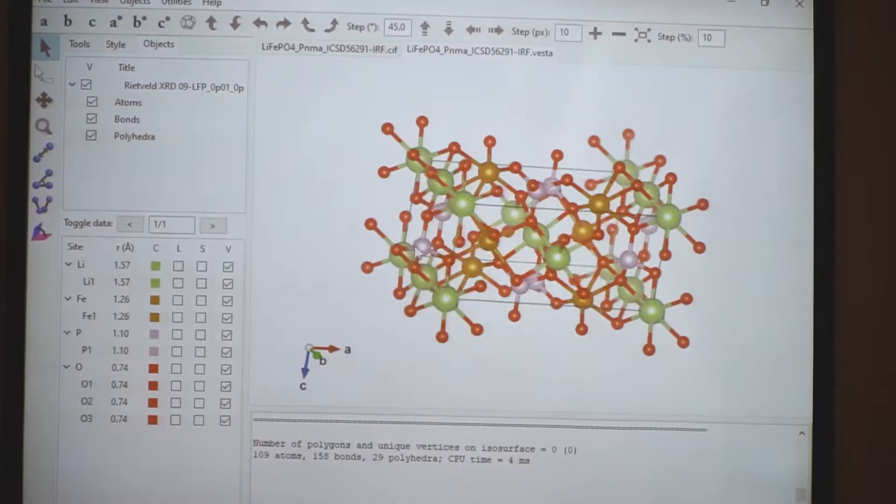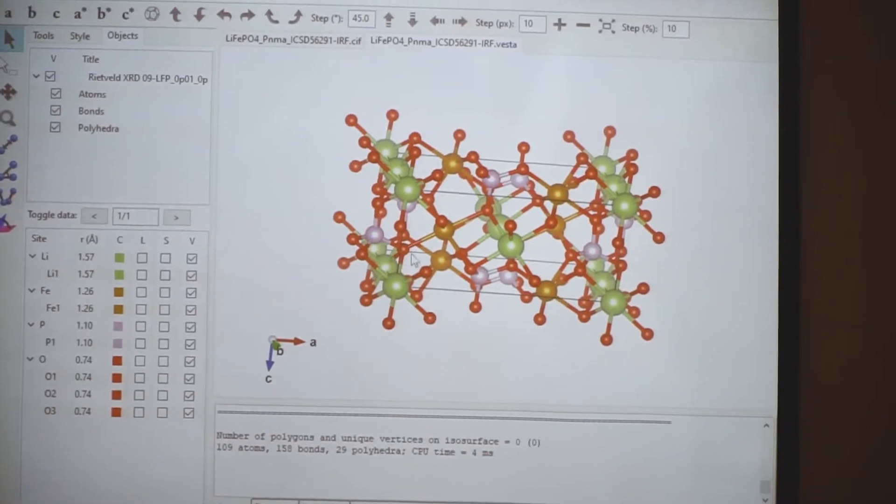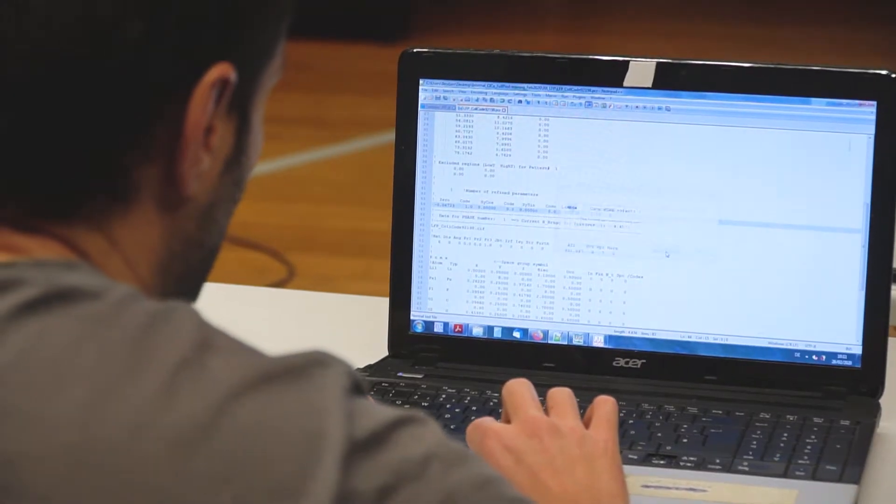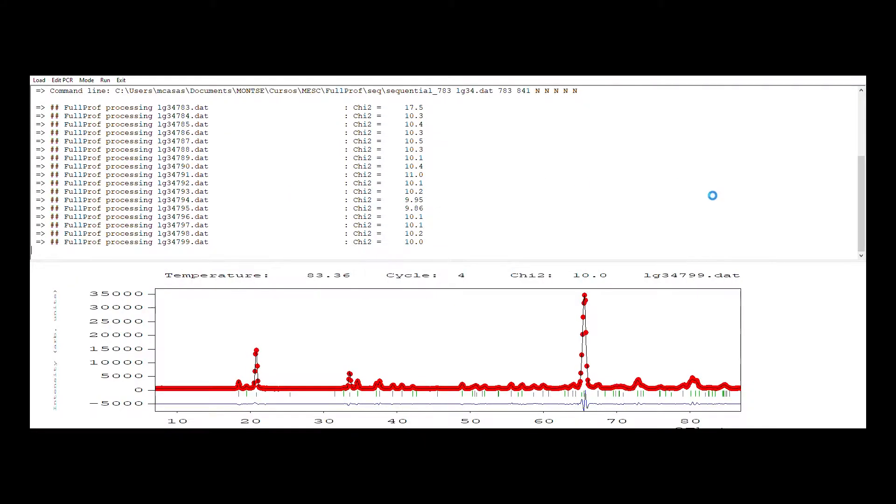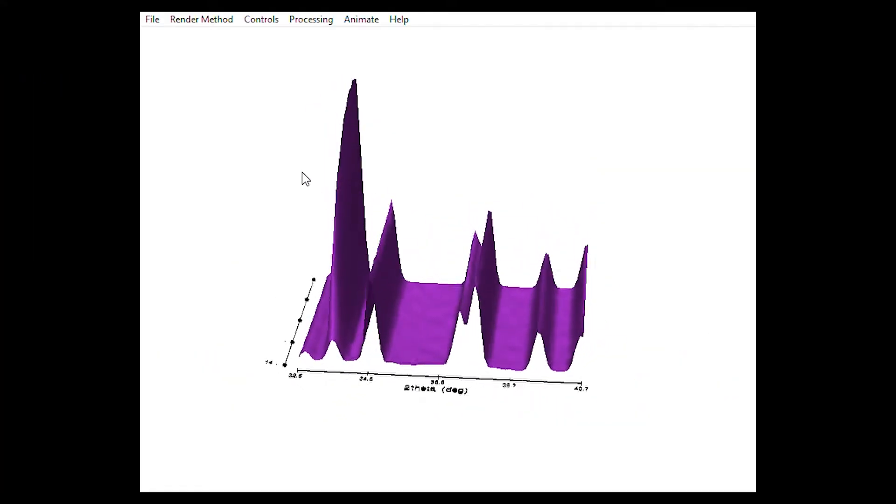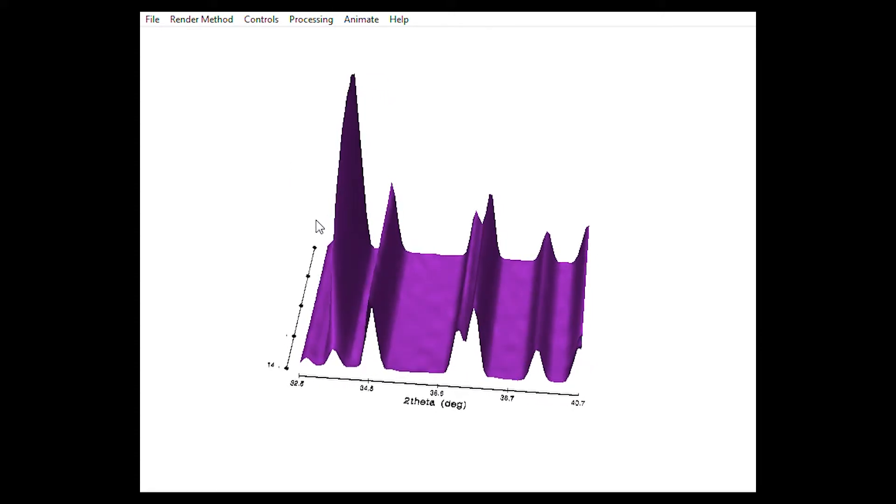Phase identification is done by comparing unknown measured data with known reference patterns taken from databases. Once identified, the pattern is analyzed by an iterative curve-fitting process using a structural model as a starting point, which allows to extract a sample's information.